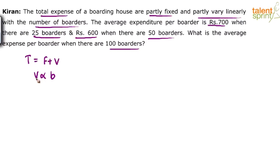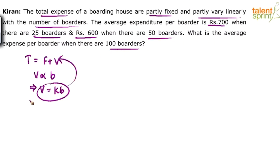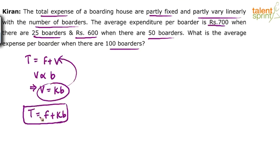Varies linearly with the number of borders means proportional to the number of borders. The variable can be taken as k times b, where k is some constant multiplied by the number of borders. So the total expenditure equals the fixed component f plus kb — a fixed component plus k times the number of borders, where k is a constant.